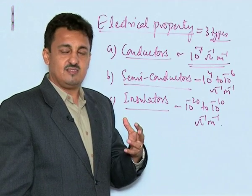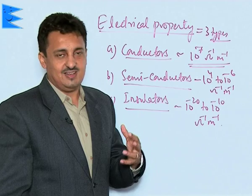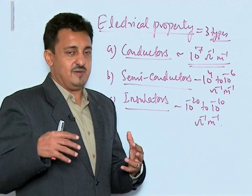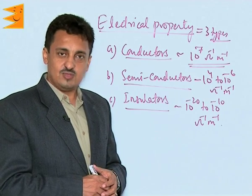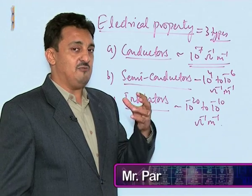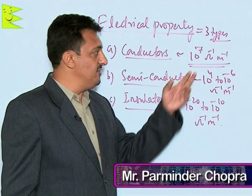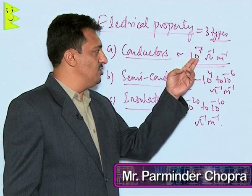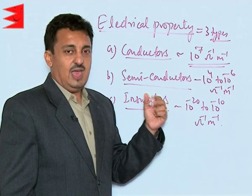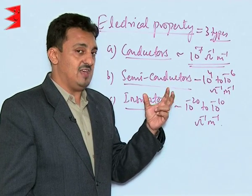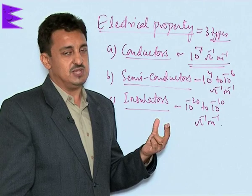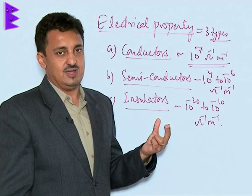Conductors are solids which show very high electrical conductivity — they allow the passing of electricity through them. They have a very high electrical conductivity of the range of 10 to the power 7 ohms inverse meter inverse. Any solid having this much value of electrical conductivity is said to be a good conductor.